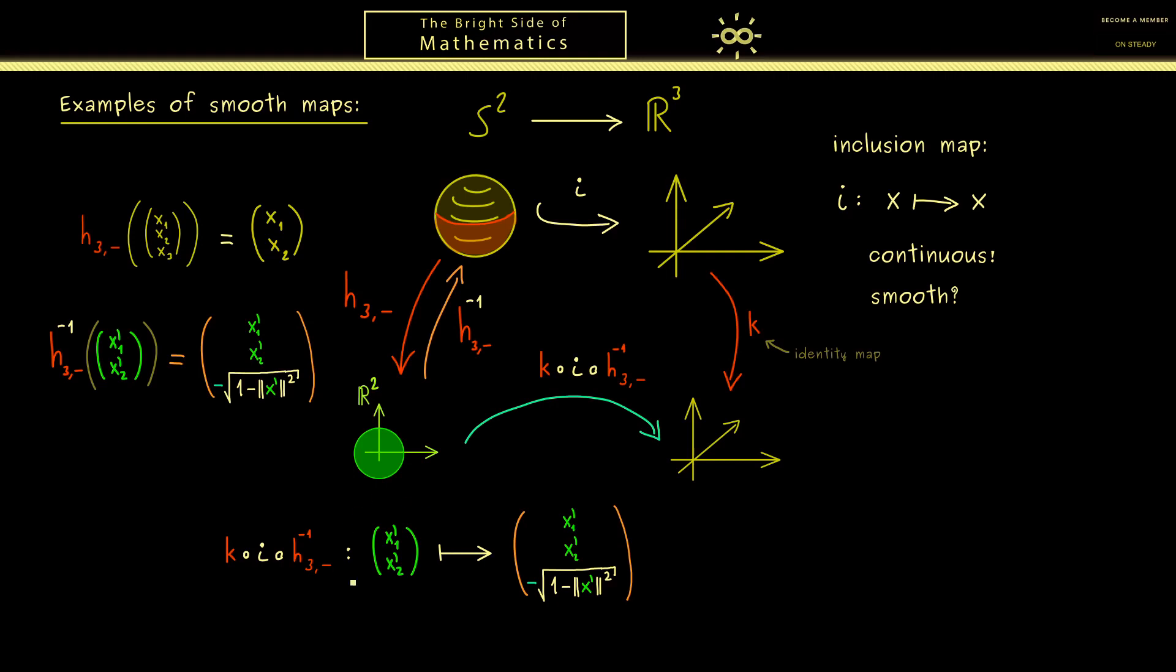And it's not hard to see, that this is actually a differentiable map. Moreover, you can show, it's a C∞ function. Therefore, our inclusion map i here between manifolds is a smooth map. Of course, what we have skipped is that we can also consider all the other hemispheres here, but it works the same. Therefore, we get our result, that this is our first abstract smooth map.